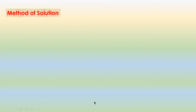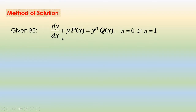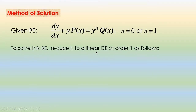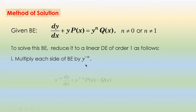Method of solution: Given Bernoulli's equation of the form dY/dX plus Y·P(X) equals Y^N·Q(X), where N is not equal to 0 or N is not equal to 1. To solve this Bernoulli's equation, reduce it to a linear DE of order 1 as follows. Multiply each side of this Bernoulli's equation by Y^(−N). Hence, we get Y^(−N)·dY/dX plus Y^(1−N)·P(X) equals Q(X).